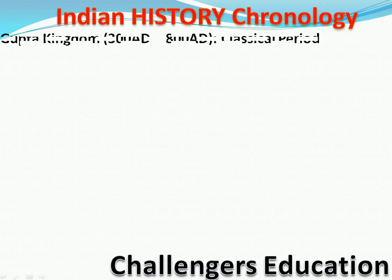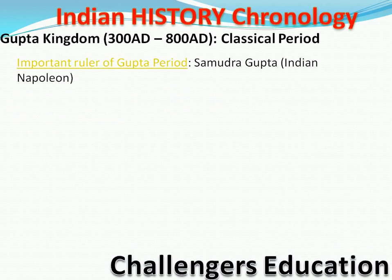Iske baad jo aayega woh hai Gupta period, jise hum Classical period bhi kehte hain. Ismein music aur arts mein bahut zyada kaam hua. Yeh shuru hota hai 382 AD se lekar 880 AD tak. Iske jo important ruler hai, that will be Samudragupta — aur ise hum Indian Napoleon ke naam se bhi jaante hain.